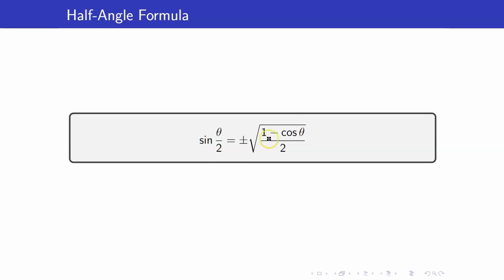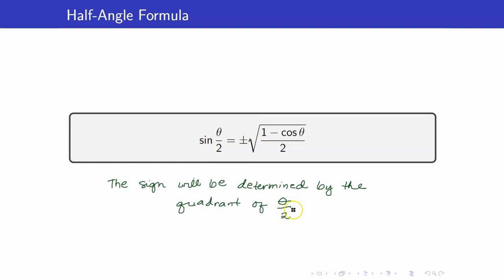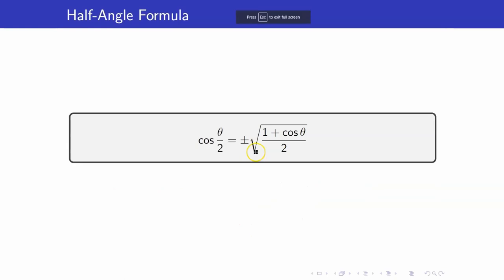Note that we take the square root, giving us sine of theta over 2. The sign — plus or minus — is determined by the quadrant of theta over 2. You have to know first which quadrant theta over 2 is in.